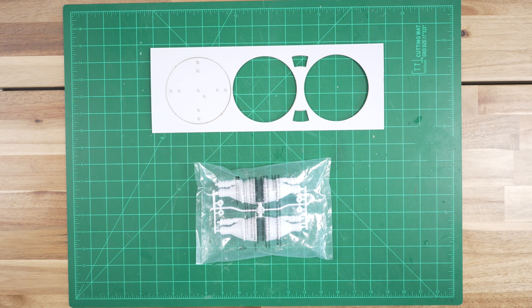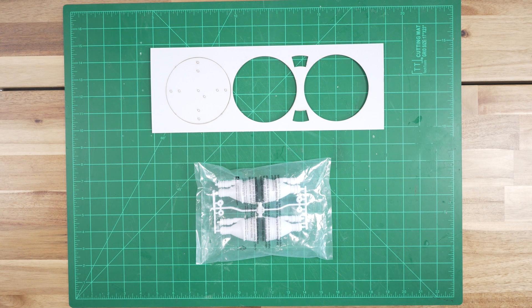10, 9, ignition sequence starts, 6, 5, 4, 3, 2, 1, 0, all engines running, liftoff. Welcome to part 4 of our video series highlighting the assembly of the new 1-100th scale Saturn V kit from ESDES.